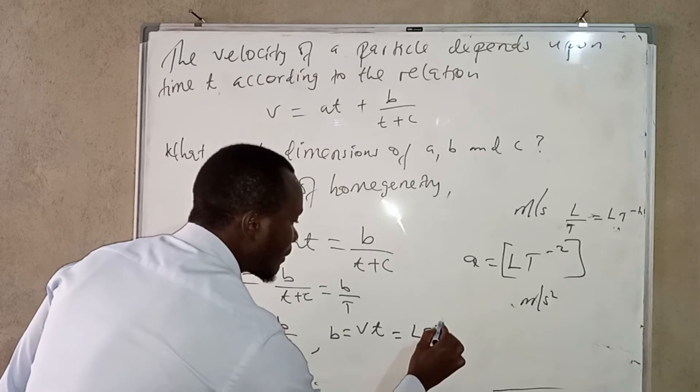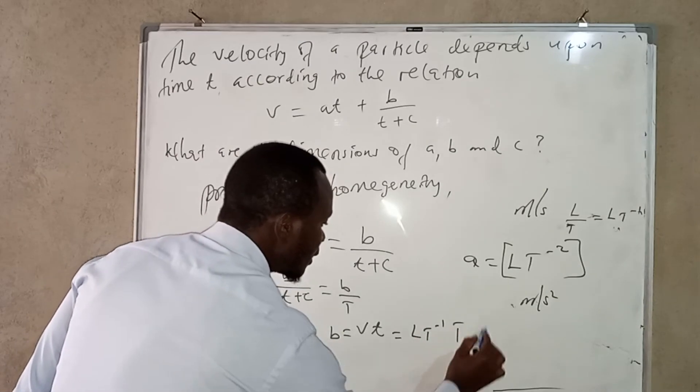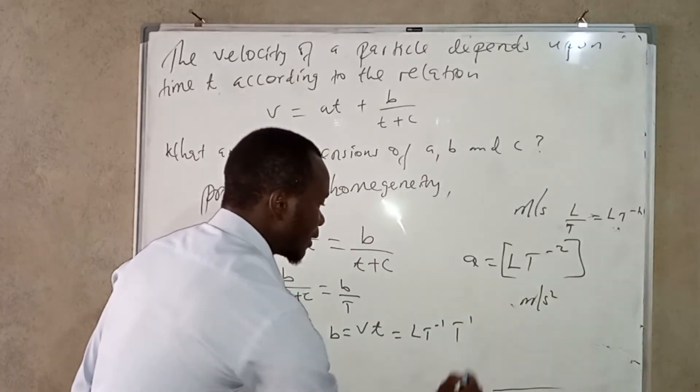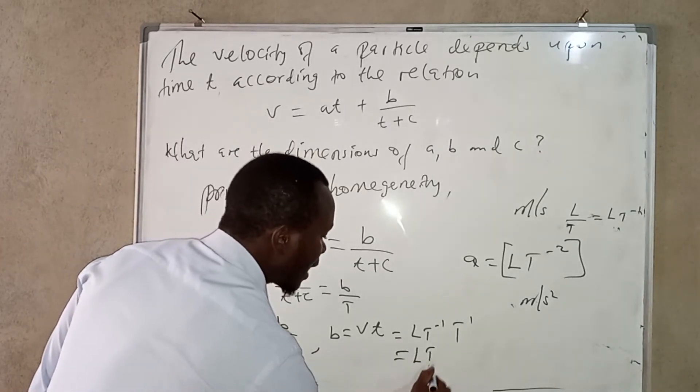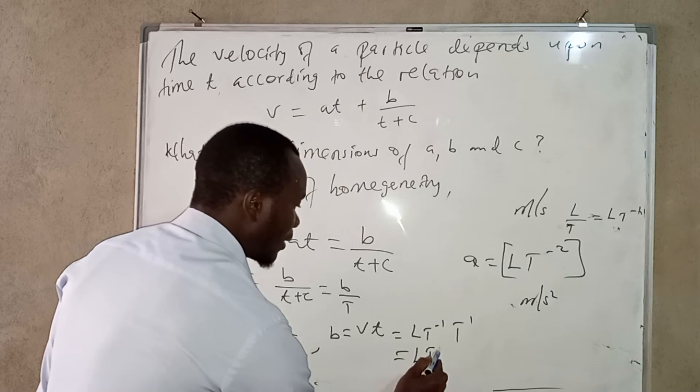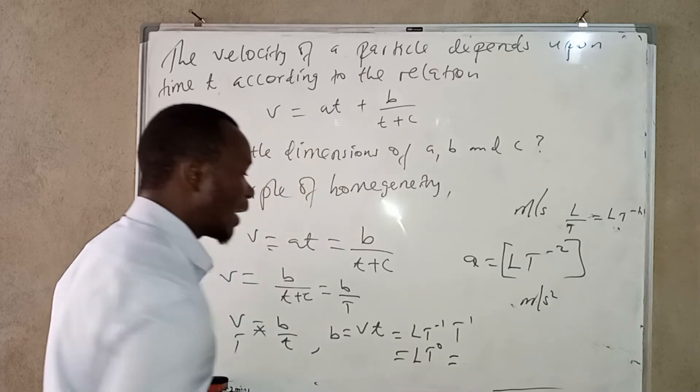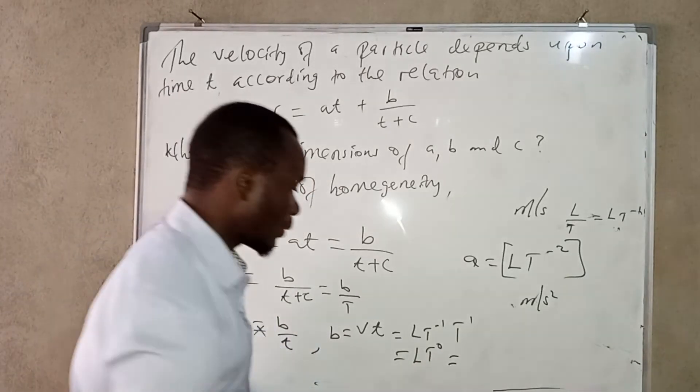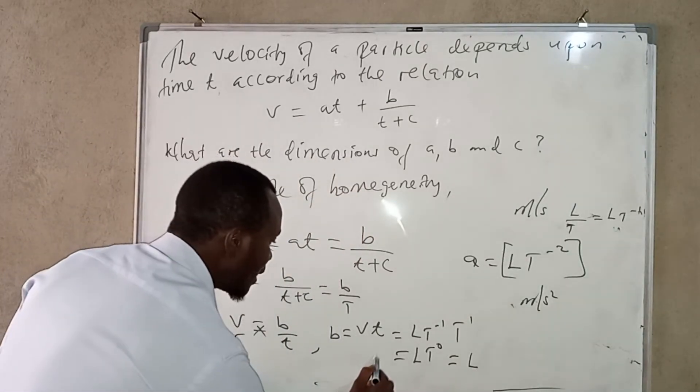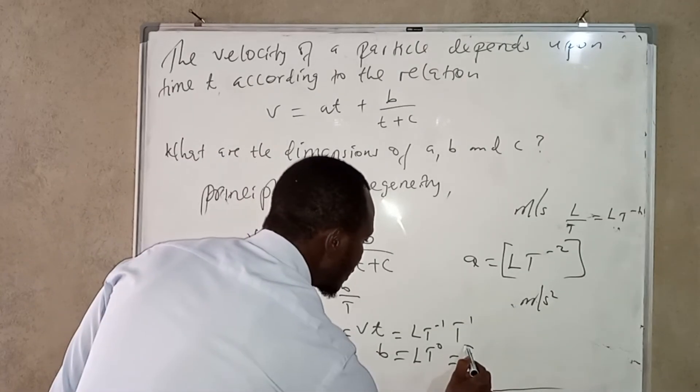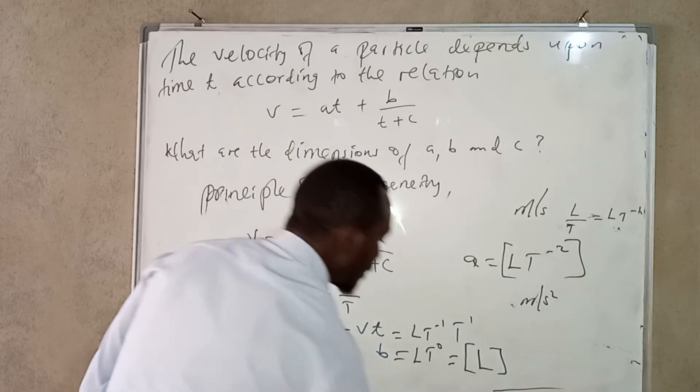In terms of dimensions we have for v it is L T to the power negative 1, then T. So this is plus 1. So this will give us L T negative 1 plus 1, it will be 0. And any number raised to the power 0 is 1. So we are going to have 1. So the dimensions for B, it is this.